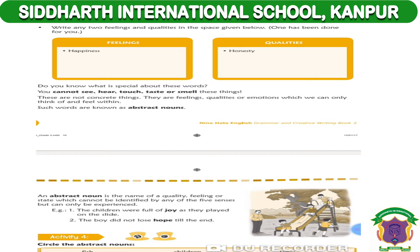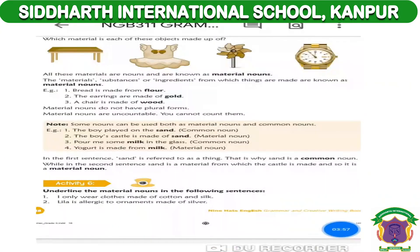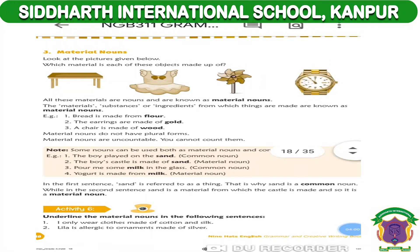Now let's read about the next type of noun: the material noun. What do you understand by material noun? Materials, substances, or ingredients from which things are made are known as material nouns. Listen again: materials, substances, or ingredients from which things are made are known as material nouns.